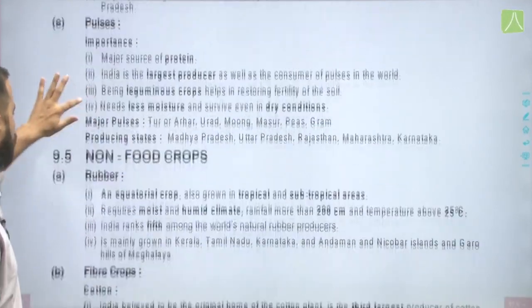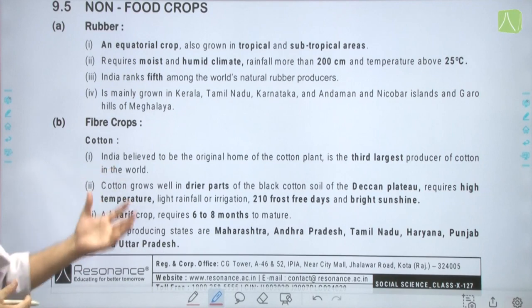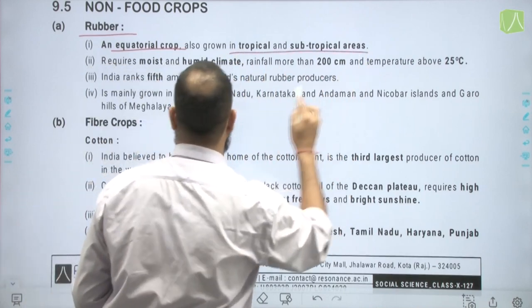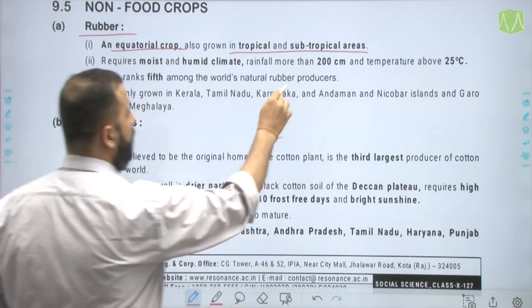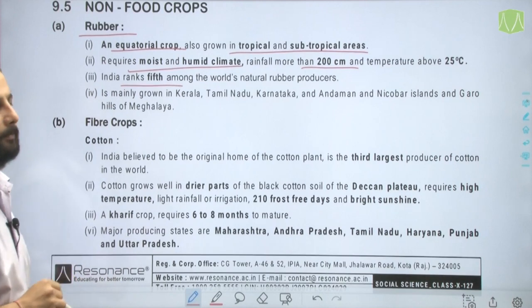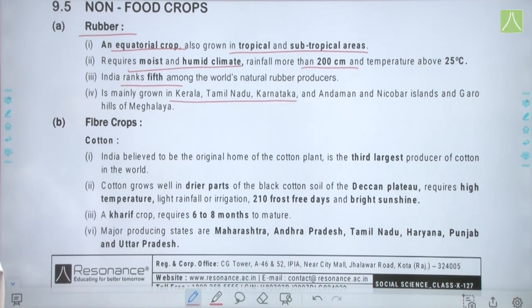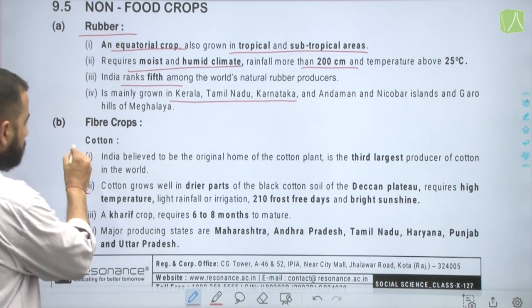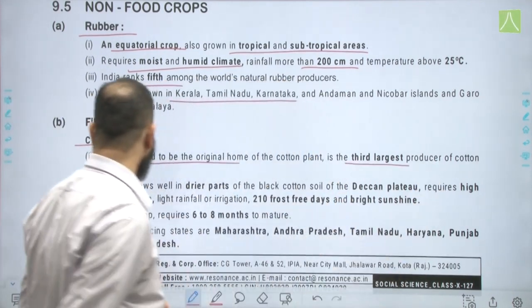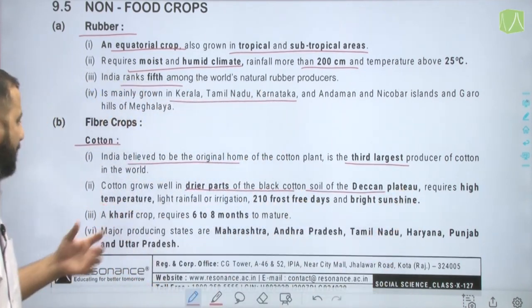Moving on to non-food crops — rubber and fiber crops such as cotton and jute. Rubber is an equatorial crop also grown in tropical and subtropical regions, requiring more than 200 centimeters of rainfall and a moist and humid climate. India ranks fifth among the world's natural rubber producers and it is mainly grown in Kerala, Tamil Nadu, Karnataka, Andaman and Nicobar, and the Garo Hills of Meghalaya. India is believed to be the original home of the cotton plant and is the third largest producer of cotton in the world.